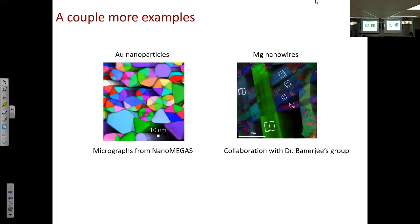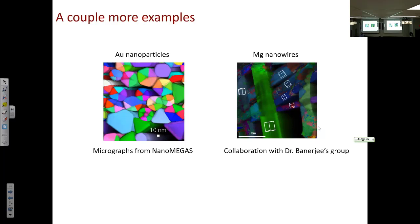Regarding beam-sensitive materials, there are three approaches: first, reduce the beam current by using a large spot size (dimmer beam); second, sacrifice one area for focusing then move to a virgin area for a single scan to minimize beam damage; third, use a cryo TEM holder — available at MIC — which cools the sample to very low temperature, reducing beam sensitivity. You don't need cryo TEM only for biological materials; it works as a cooling holder for any beam-sensitive specimen.